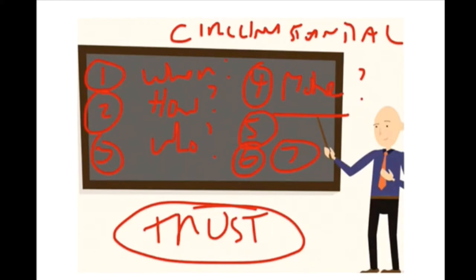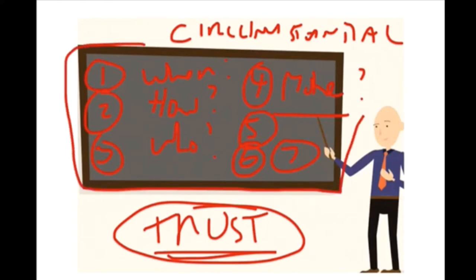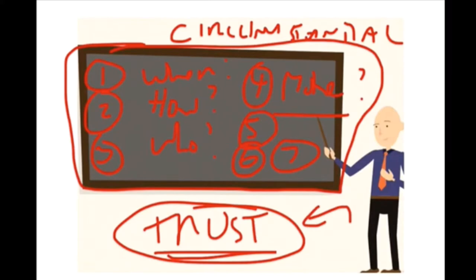There is one factor that does answer the question of whether or not we can trust the evidence, but the Supreme Court wants to look at it differently. It doesn't look at all the circumstances surrounding the making of the statement — who made it, how, when. Instead, it simply asks the larger question: can we trust the evidence because it is most likely true?